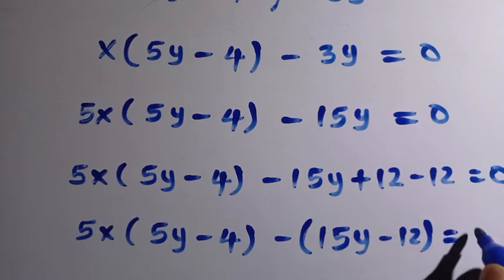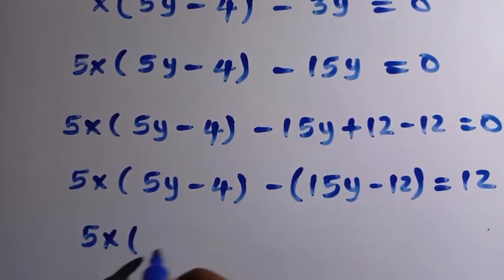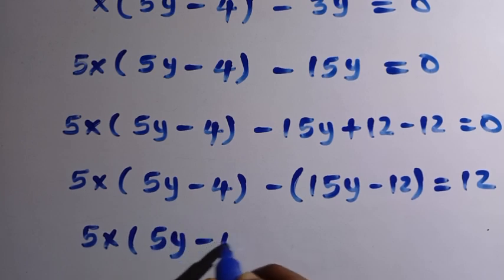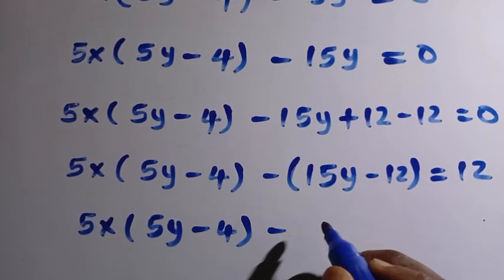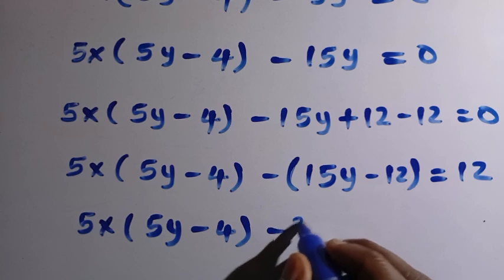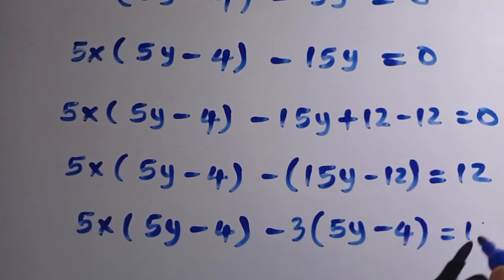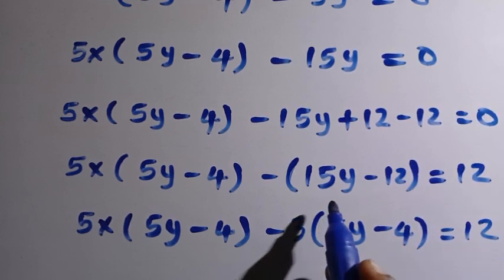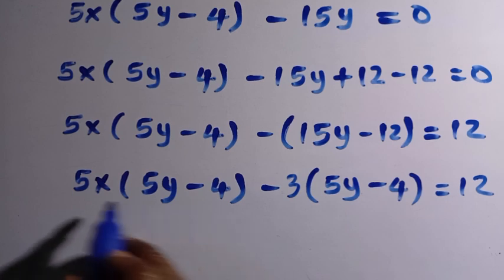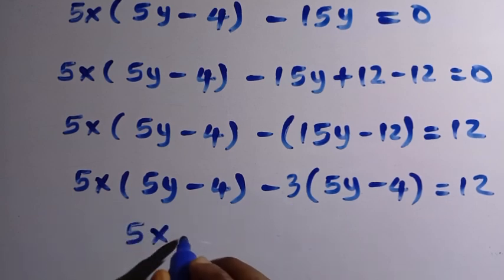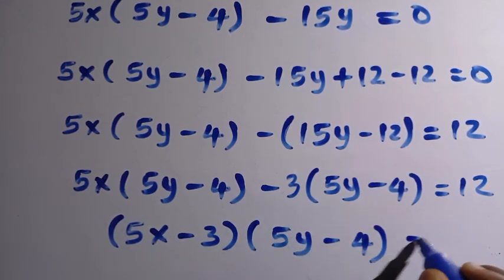Taking minus 12 to the other side gives us 12. From here we have 5x times (5y minus 4) minus 3 times (5y minus 4) equals 12. Since both brackets are (5y minus 4), we combine 5x and minus 3 to get (5x minus 3)(5y minus 4) equals 12.